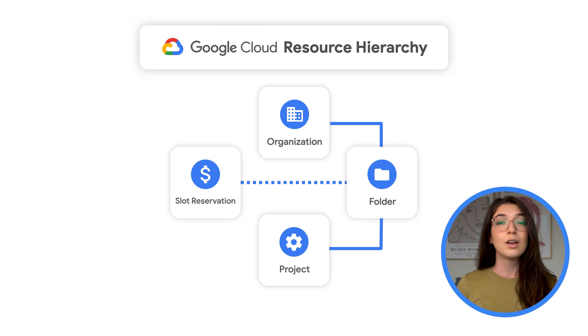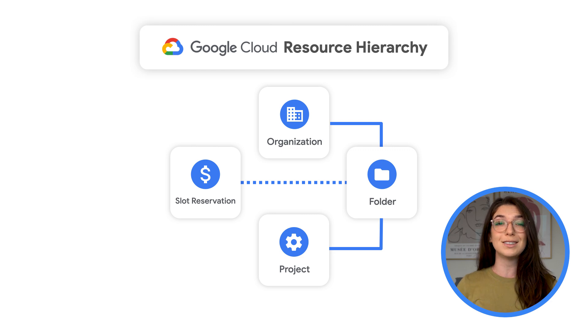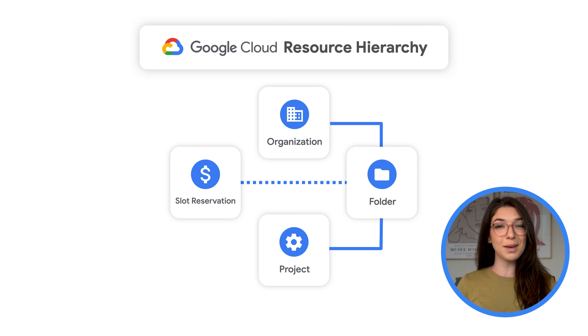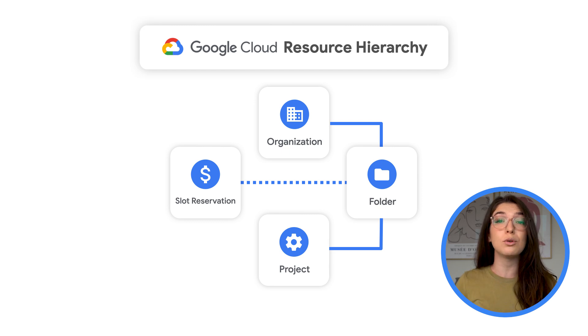Speaking of billing, BigQuery offers two different pricing models. Projects with on-demand pricing are charged for the number of bytes processed by each query, but with this model there are per-project limitations and quotas that are important to consider. The other option is flat rate pricing, where customers purchase compute capacity to handle workloads. With this model, reservations can be assigned at the organization, folder, or project levels to handle jobs within that resource. On-demand pricing is great for getting started with BigQuery, but as your consumption grows, flat rate offers scalable compute with predictable pricing.